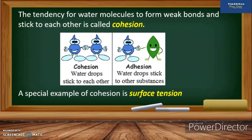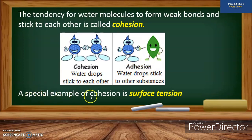The tendency for water molecules to form weak bonds and stick to each other is called cohesion. As you can see in the diagram, the same water molecules stick to each other — that is cohesion. On the other hand, when water drops stick to other substances, it's called adhesion. A special example of cohesion is surface tension.